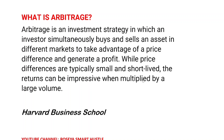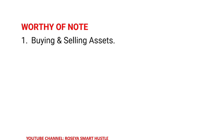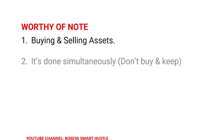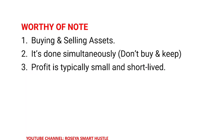I already made a video covering arbitrage overview on my channel, but I want to lay emphasis on a few key points. Number one: buying and selling of assets — in this video our asset is cryptocurrency. Number two: it is done simultaneously, you buy and sell immediately. Number three: the profit is typically small and short-lived — the market is volatile so you need to act fast. Number four: low risk — the risk involved in this kind of arbitrage is very minimal.